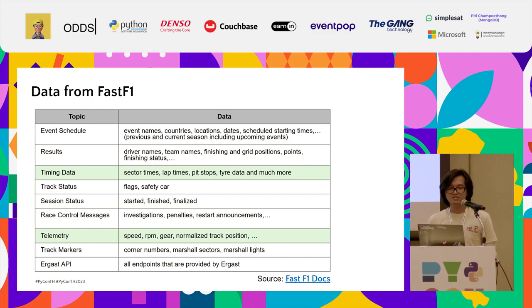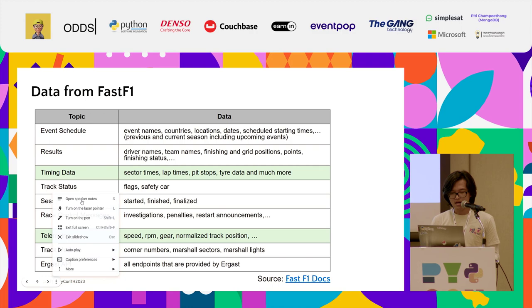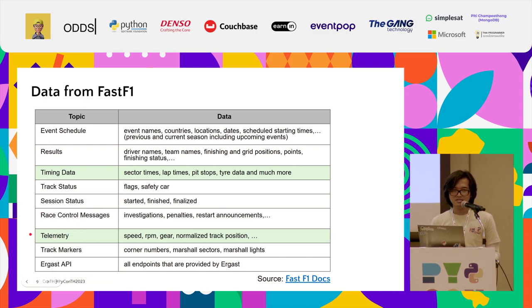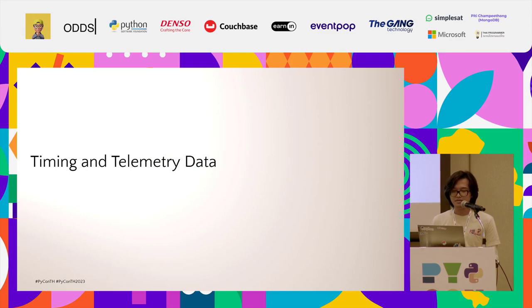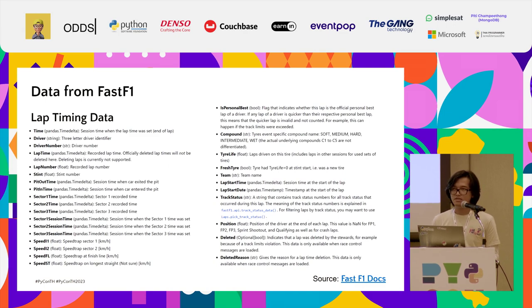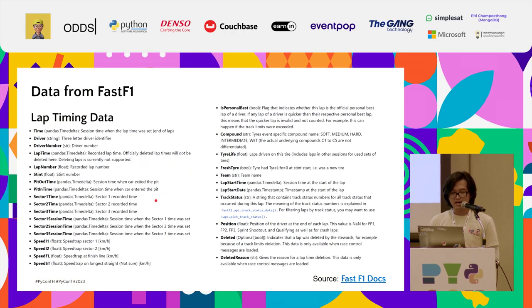FastF1 provides a lot of data, but for this presentation we'll focus on two types: timing data and telemetry data. Timing data is about how a driver performs over one lap. FastF1 gives you the time, the driver with their abbreviation, the lap time showing how fast the driver completed a lap, and also sector times — since a Formula One circuit is divided into three sectors, you get the speed and timing for sector one, sector two, and sector three.